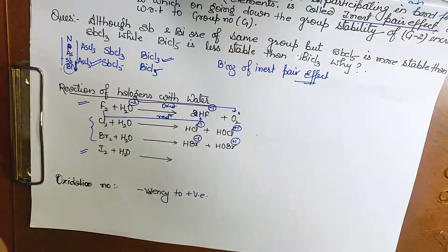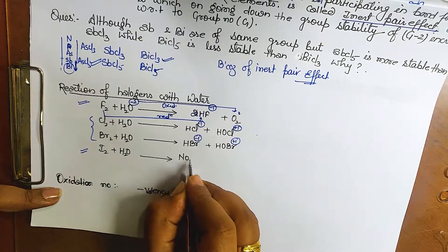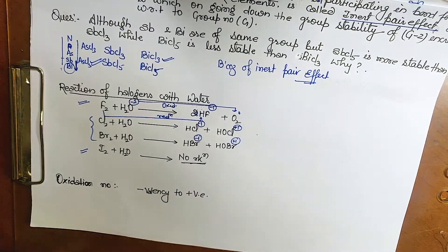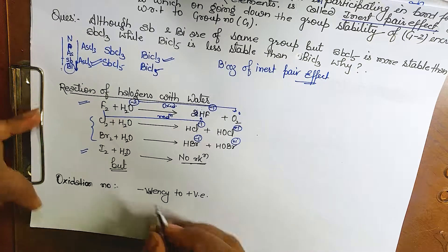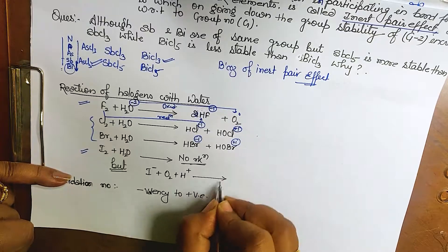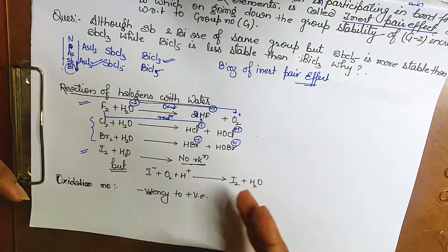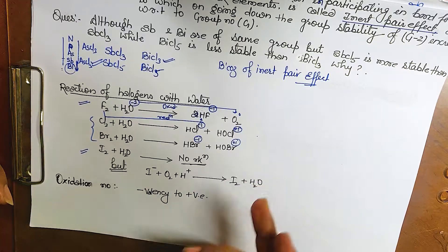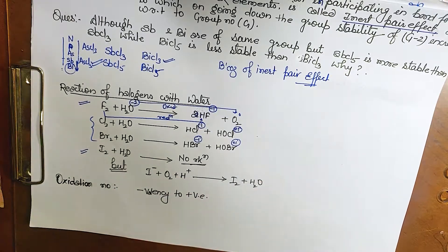For iodine, the reaction I2 + H2O is not possible — no reaction occurs. However, the reverse process works: iodide ion in acidic medium in the presence of oxygen gives I2 + H2O. Reversibility is not possible in this case. This is an important point that is frequently asked in exams.